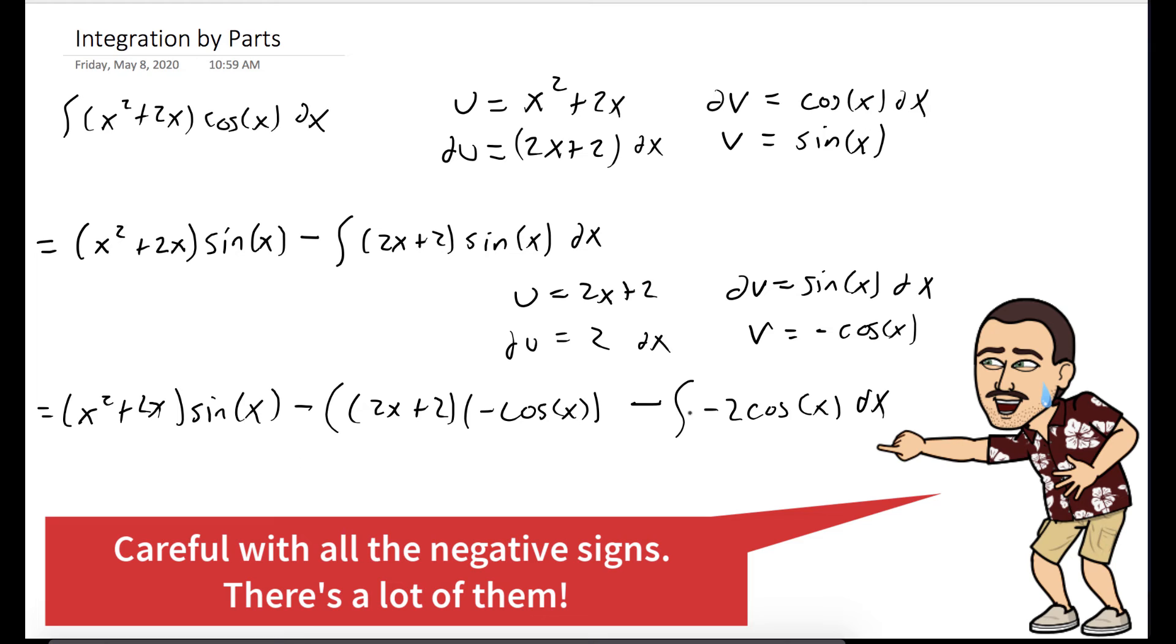And now we just have one last integral we have to evaluate. And it's the integral of negative 2 cosine of x. This requires no tricks.